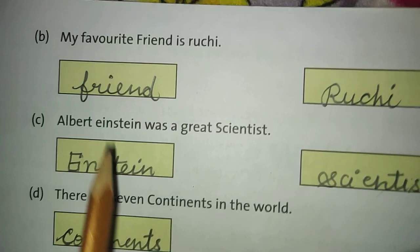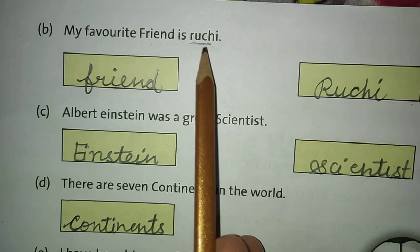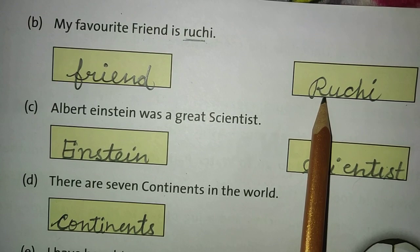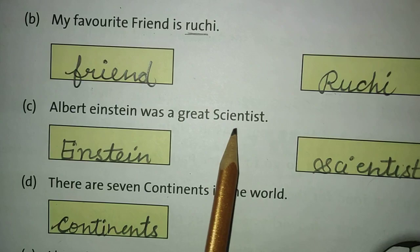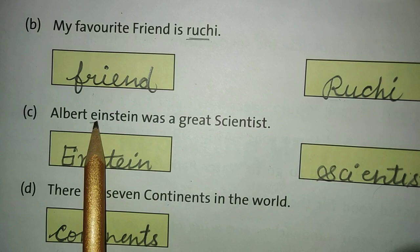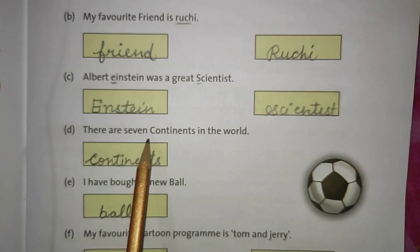The second one: 'My favorite friend is Rucci.' Friend is a common name, so F will be small. But Rucci is a special name, so R will be capital. The third one: 'Albert Einstein was a great scientist.' E in Einstein is given as small, so we write it big — Einstein — and scientist gets a small S.